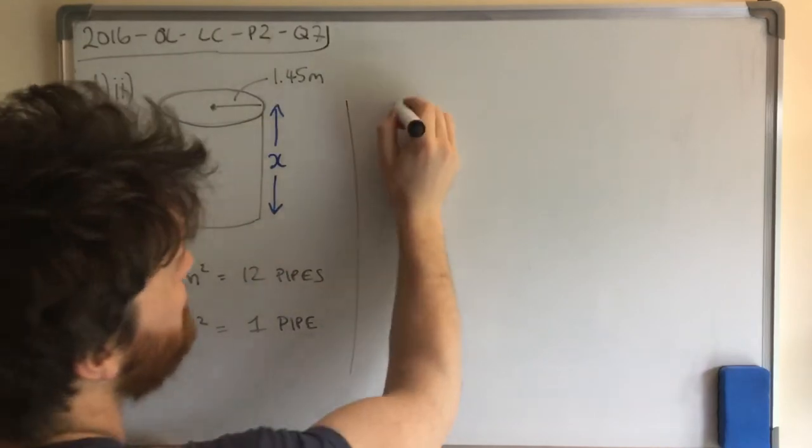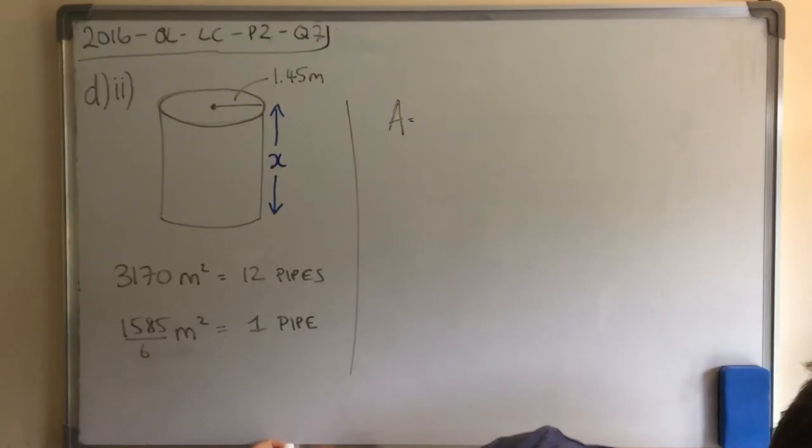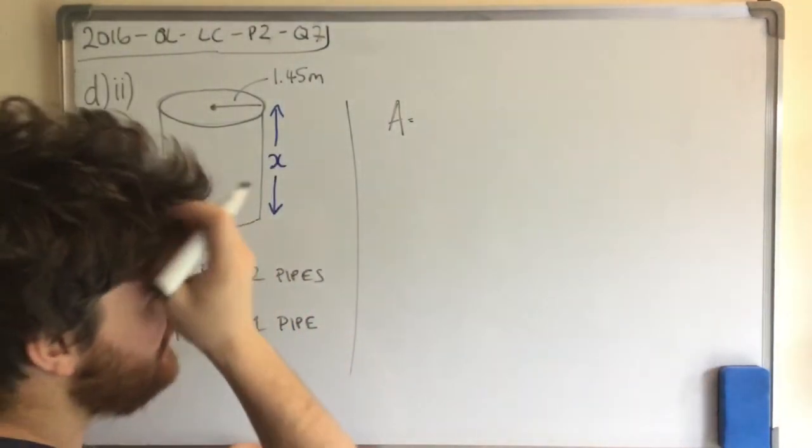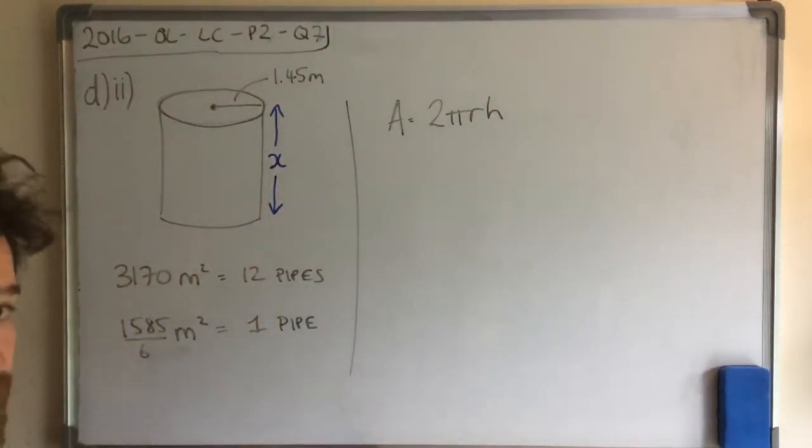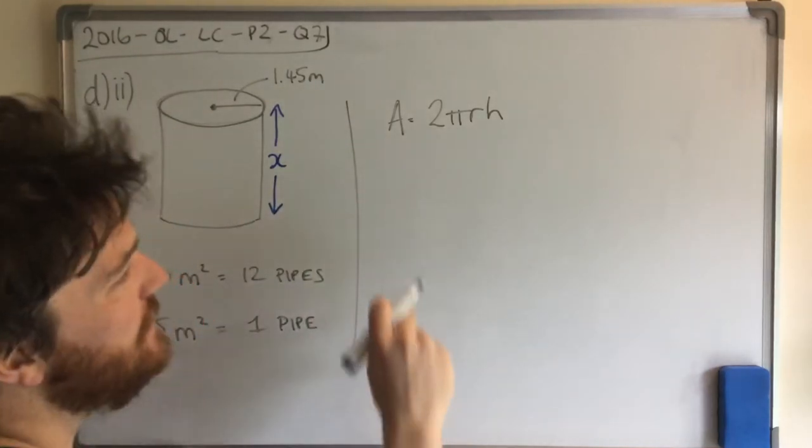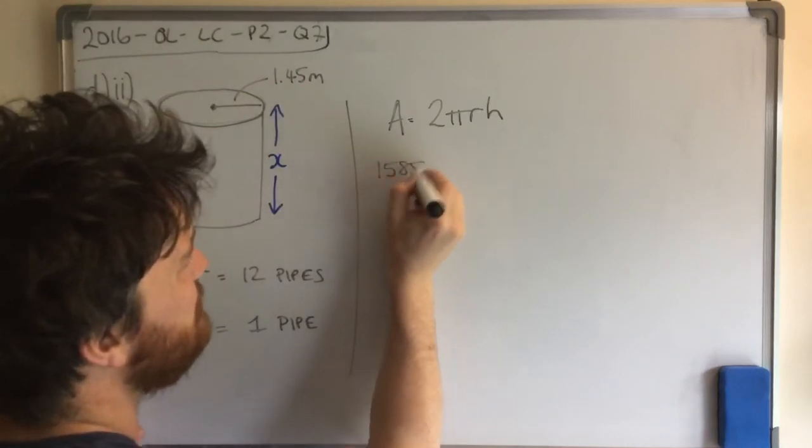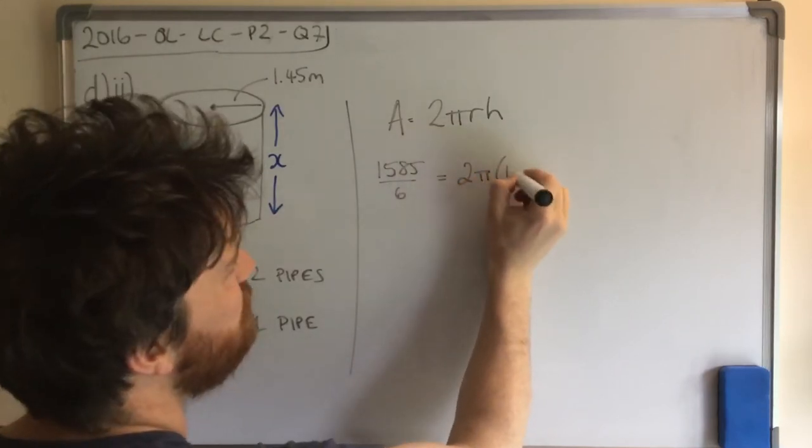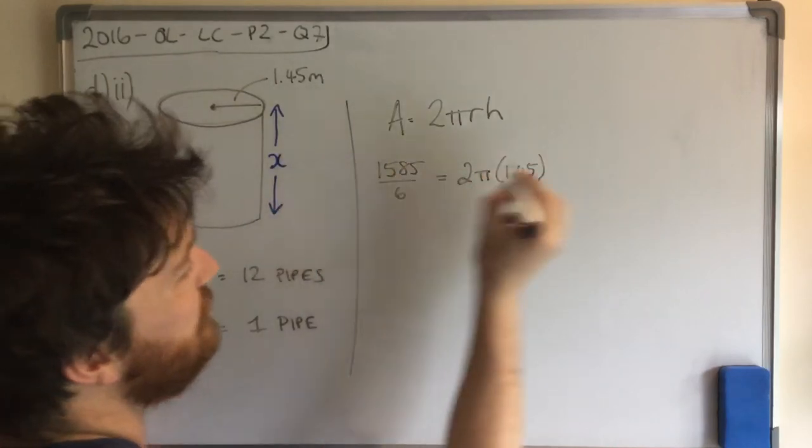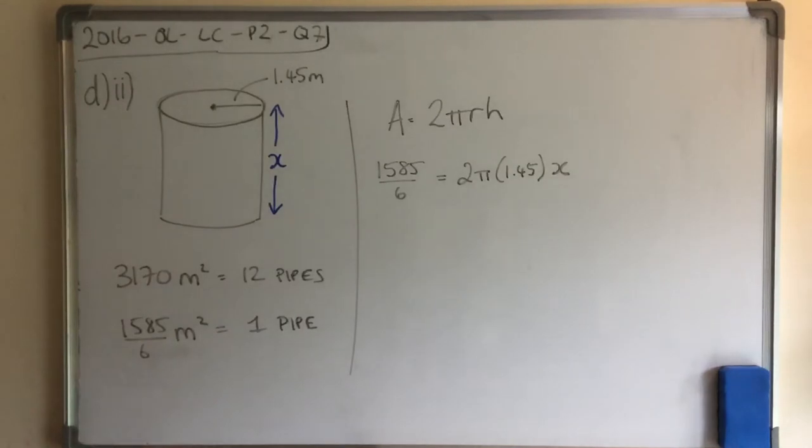So now then we're going to look at using our curved surface area equation again. So area equals, now I need to remind myself, so I don't accidentally write down the wrong formula. So I go to page 10 in my log tables and the area of a cylinder is 2πRh. And I'm going to fill in all the stuff I know. So this is for one pipe.